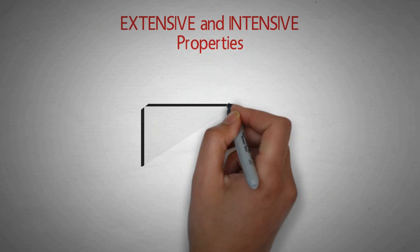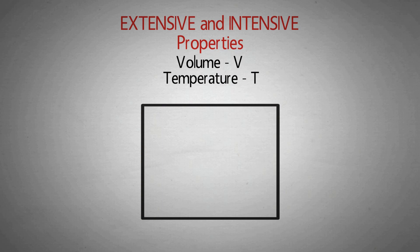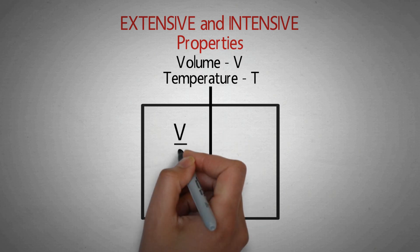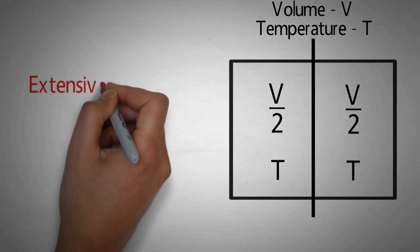Extensive and intensive properties. Let's understand extensive and intensive properties by observing this system. We have a closed system of volume V and its temperature is T. What will happen if we divide it into two parts? Volume will get divided — दोनों portions में volume V/2 हो जाएगा। And what about temperature? अगर यह system 50 degree Celsius पर था, तो divide करने पर भी दोनों portions का temperature 50 degree Celsius ही रहेगा। So volume is an extensive property.